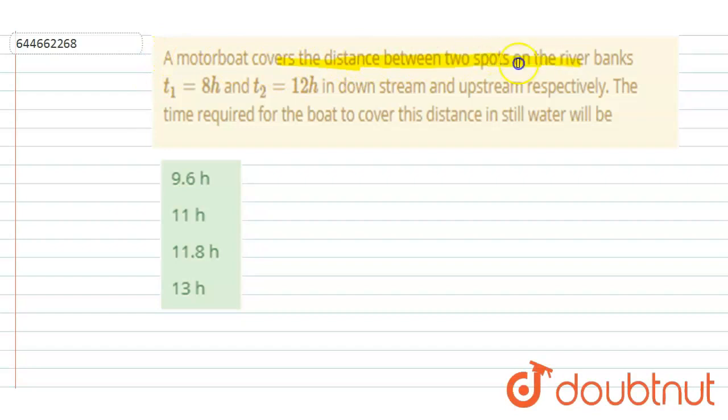A motorboat covers the distance between two spots on the river bank at t₁ equals 8 hours and t₂ equals 12 hours in downstream and upstream respectively.